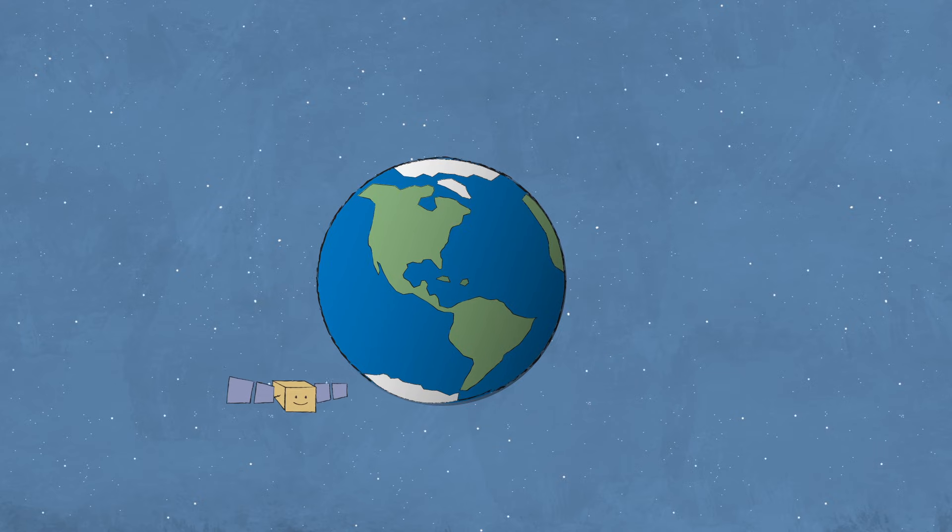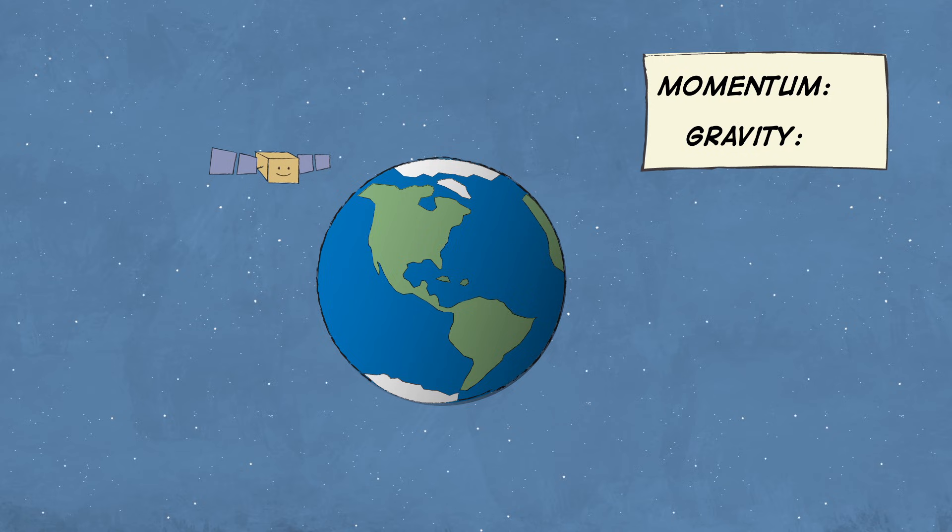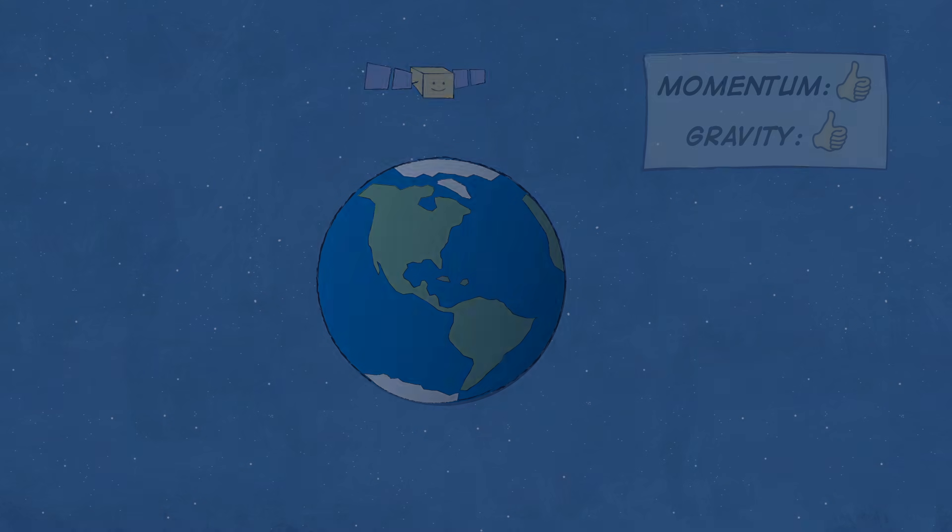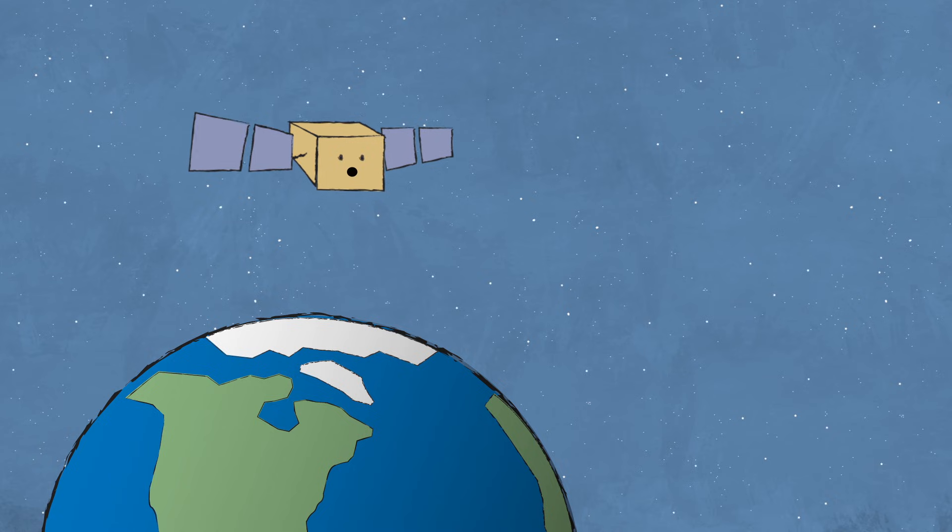When a satellite is in orbit, it has a perfect balance between its momentum and Earth's gravity. But finding this balance is sort of tricky.